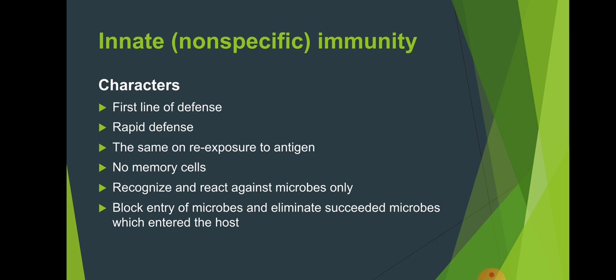The characteristics of innate immunity: it is called the first line of defense because when any invader or foreign agent enters the body, innate immunity starts its function. Innate immunity is very rapid in its function and it is always the same on re-exposure to an antigen. There is no immunological memory — an absence of memory cells. It recognizes and reacts against microbes only, blocking their entry and eliminating microbes that enter the host.